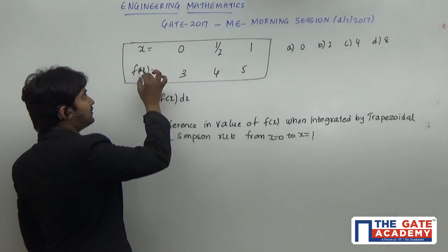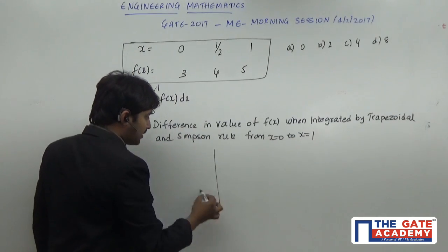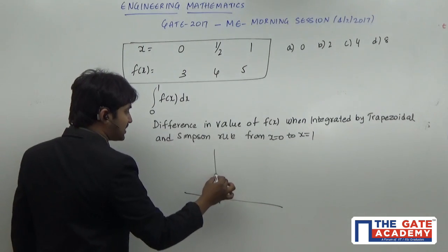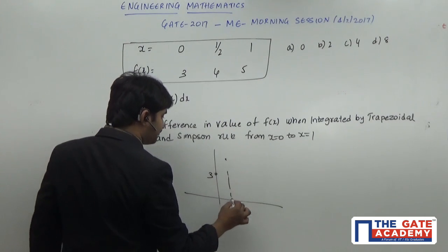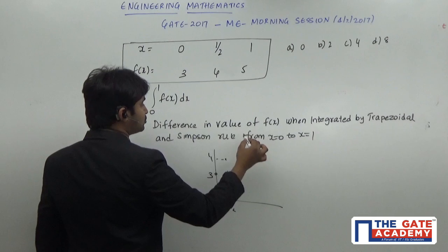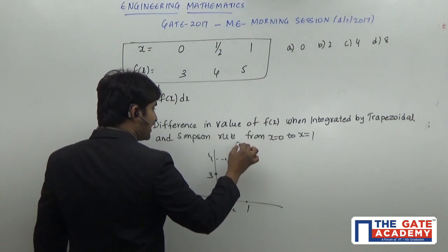Why? Because if you observe here, it is going to be a line. Why? At x equals 0, the value is 3. At x equals 1/2, the value is 4. At x equals 1, the value is 5. So it is going to be a line.